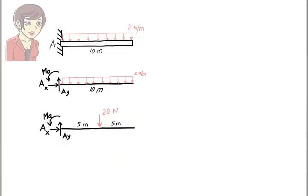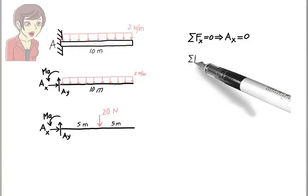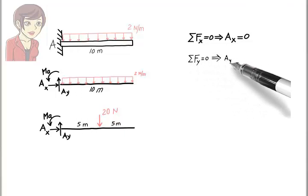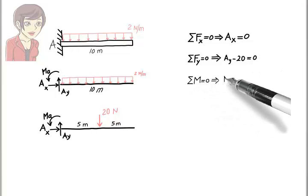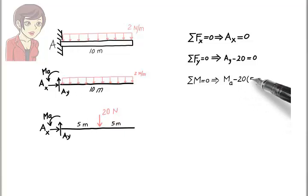Now, we can write the equilibrium equations. Ax equals zero. Ay minus 20 equals zero. Ma minus 20 times 5 equals zero.